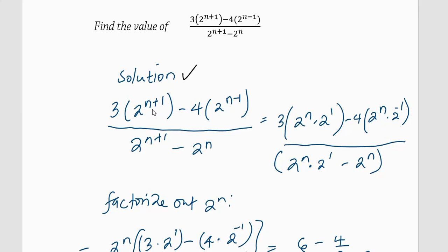Now if we apply the laws of indices, 2^(n+1) is the same as 2^n × 2^1. Similarly, 2^(n-1) is the same as 2^n × 2^(-1). And in the denominator, 2^(n+1) becomes 2^n × 2^1, minus 2^n.